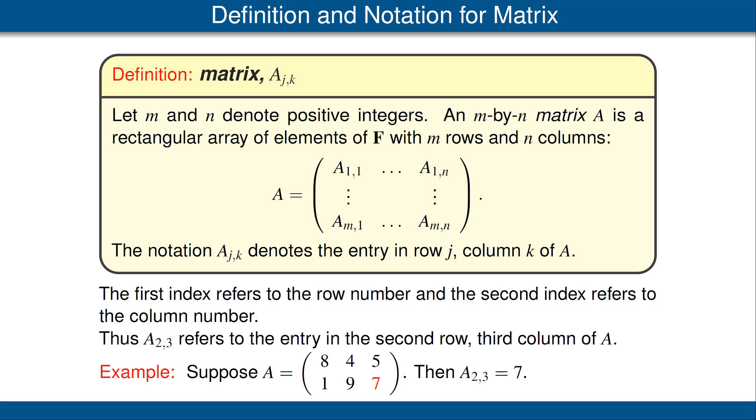For example, suppose A is the matrix shown here. Then A sub 2,3 is the entry in row 2, column 3, which is 7, which is shown in red in the matrix so that you can locate it easier.